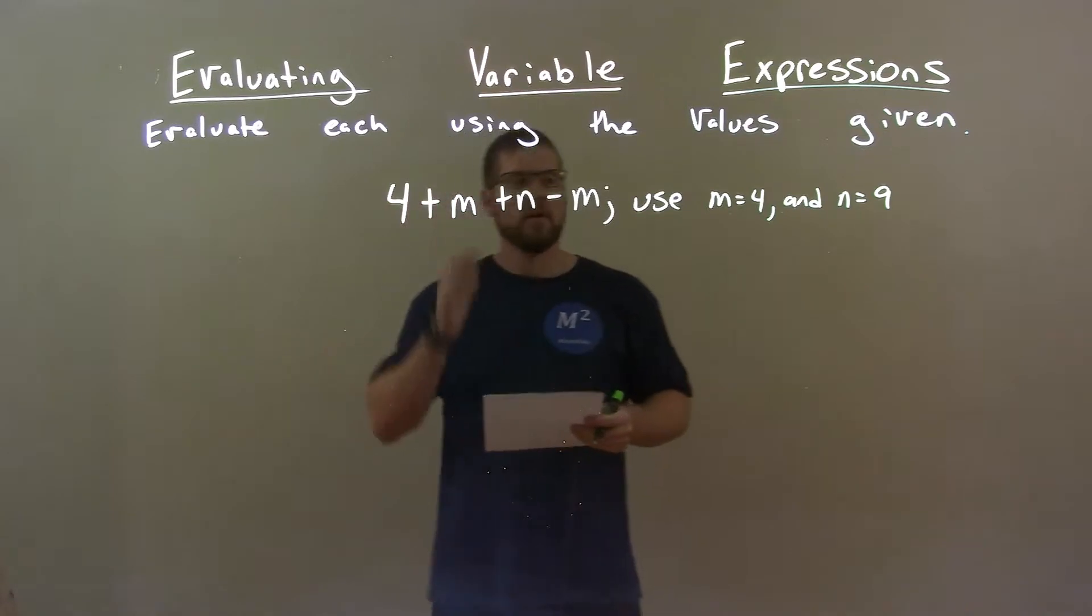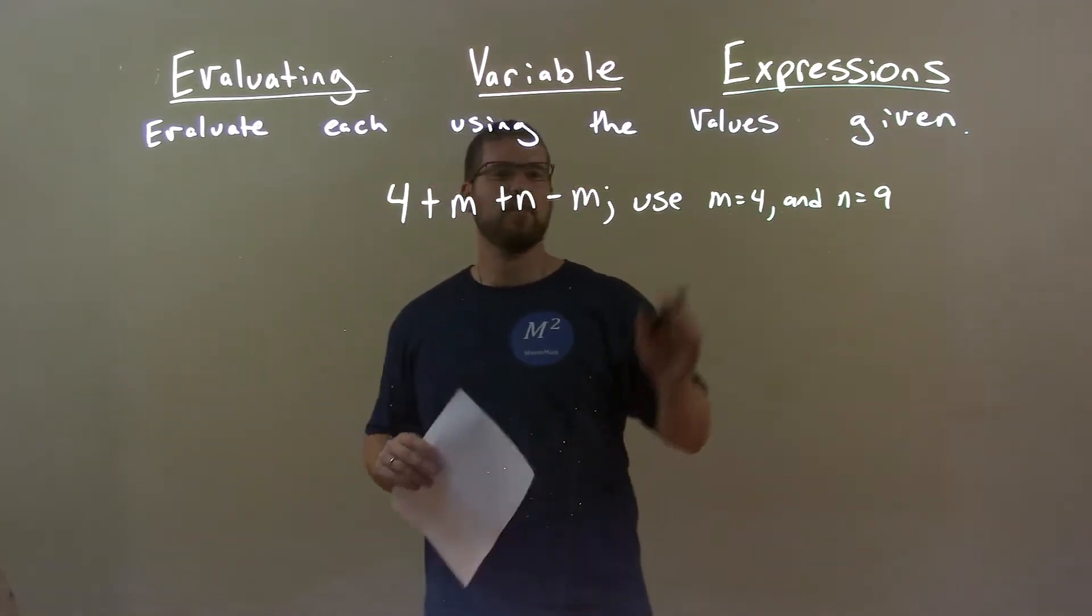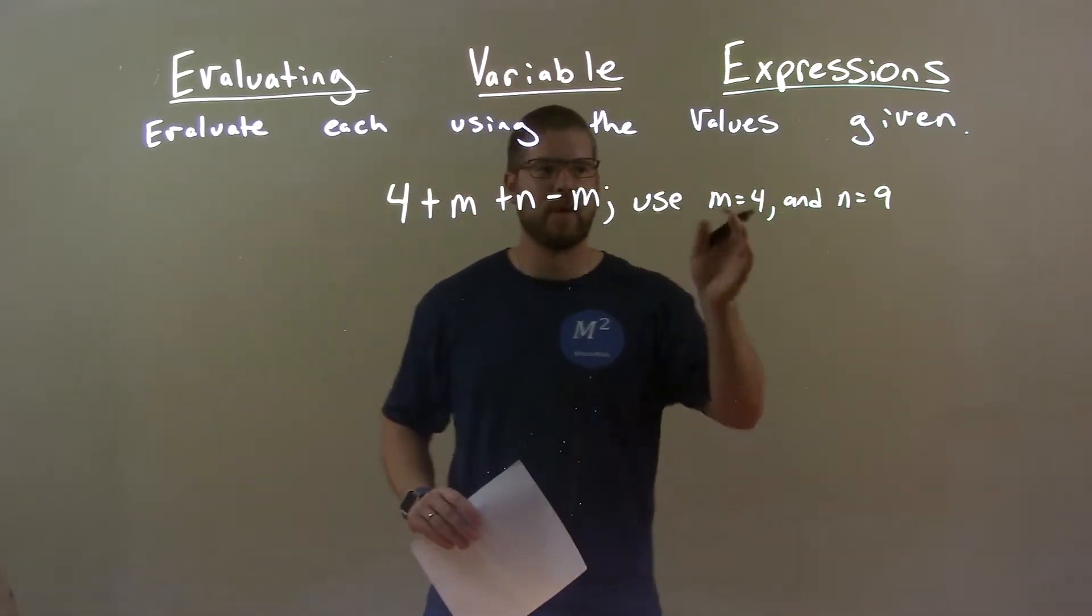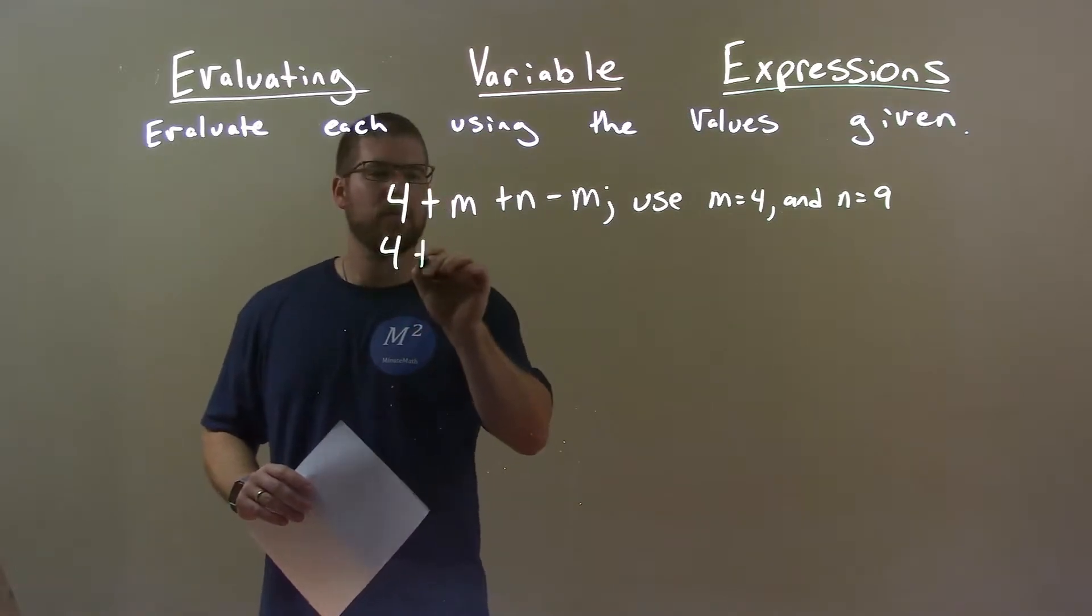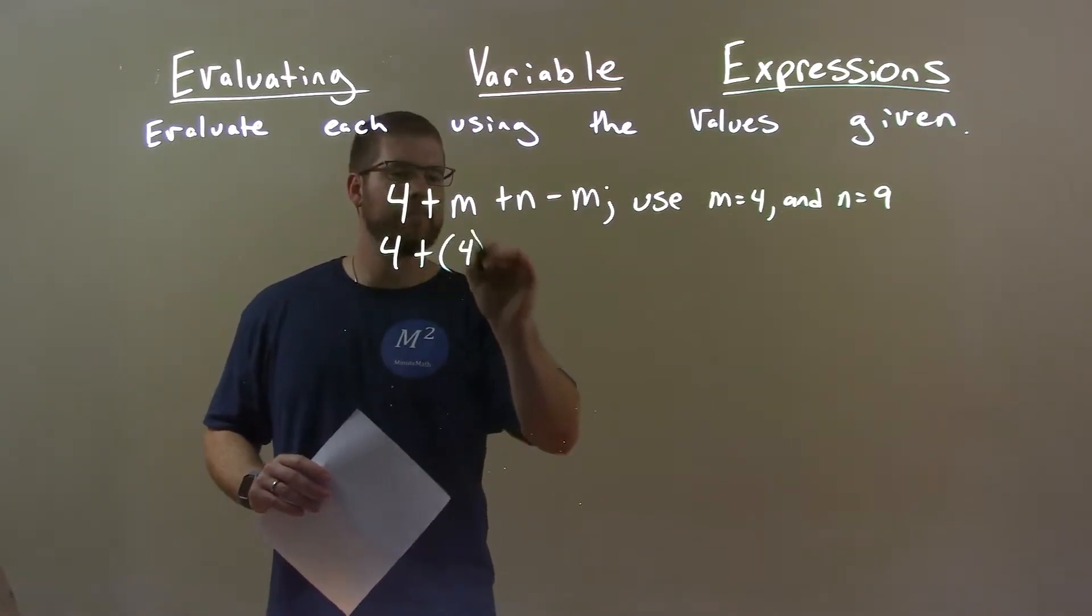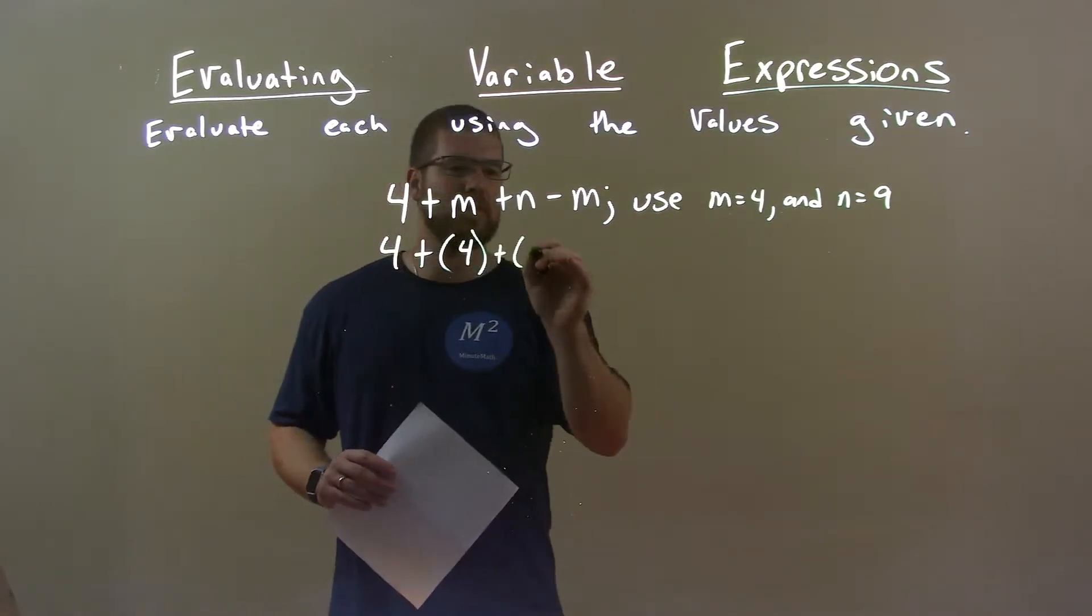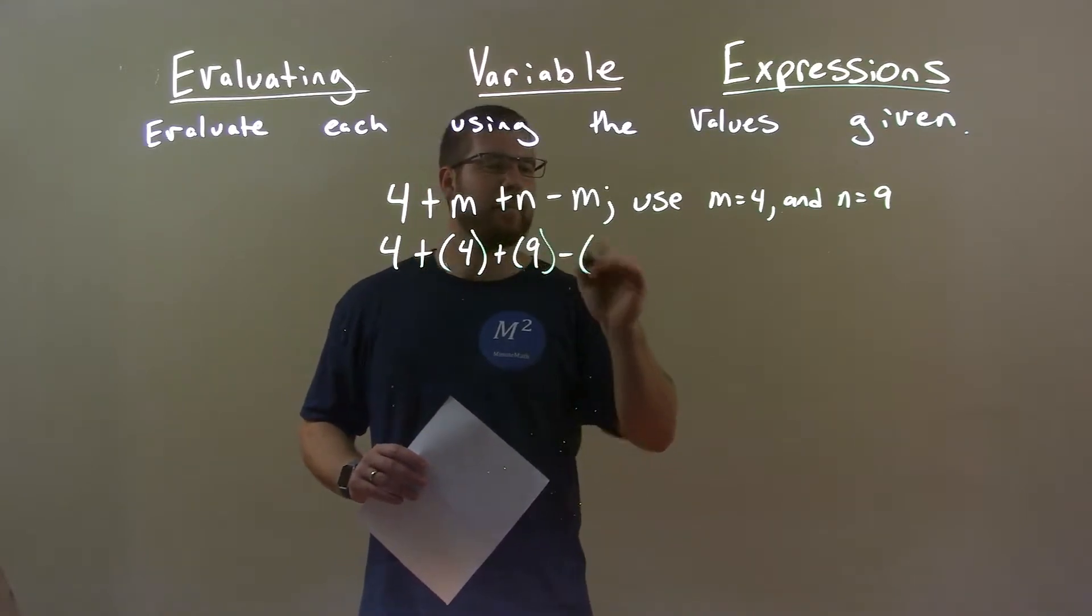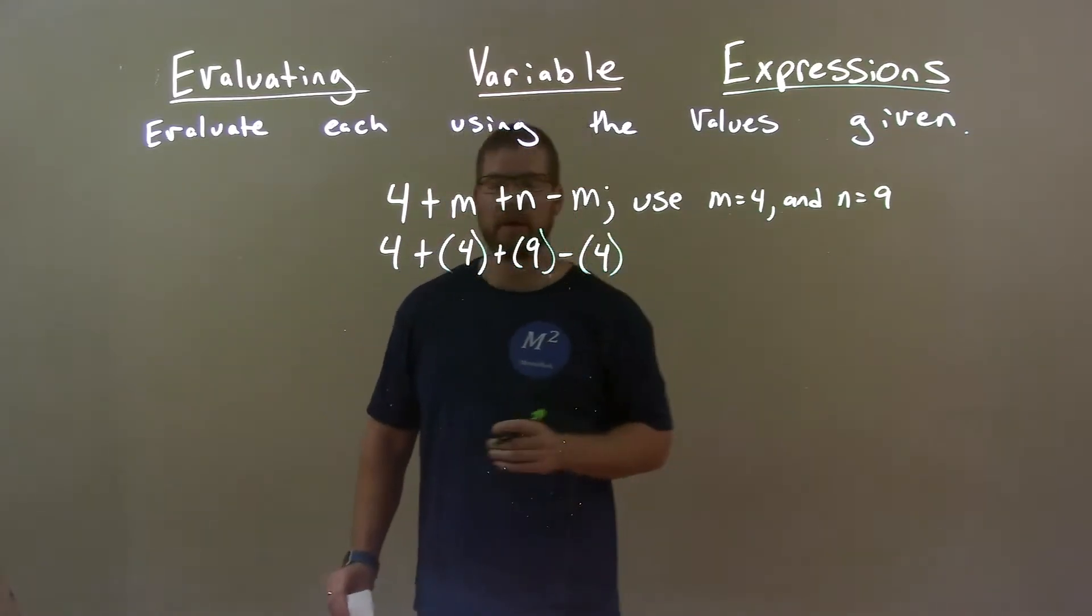All right, so first step, substitute our variables for their corresponding numbers. 4 plus m which is 4, and n which they told us was 9, subtracted by m again, which is 4. Okay.